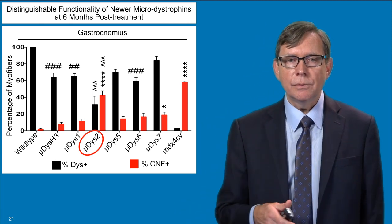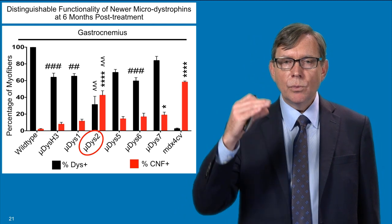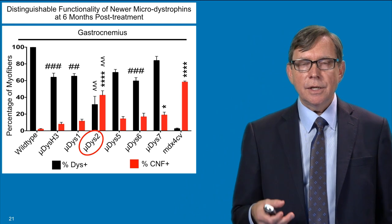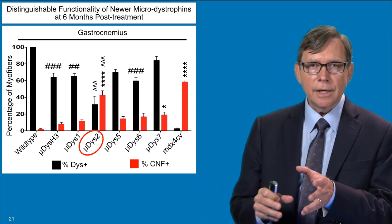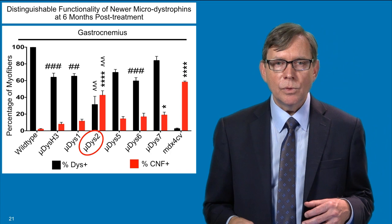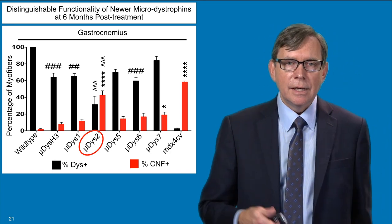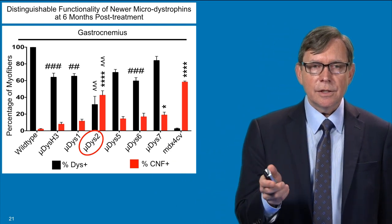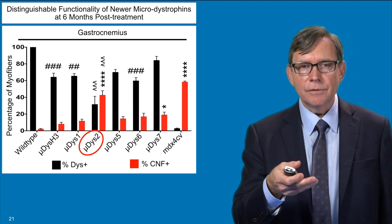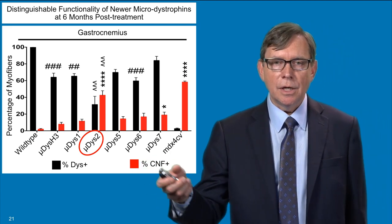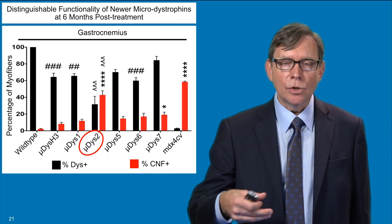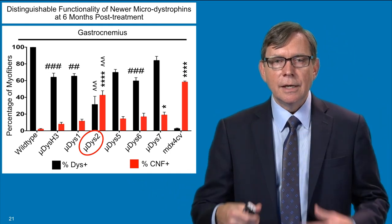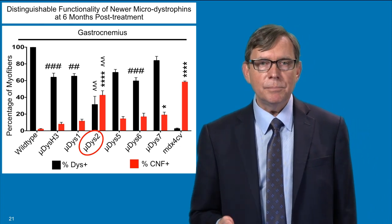That data is shown here with the red bars, where we want to see as small a red bar as possible — we don't want to see muscle cells that have the so-called centrally nucleated fibers or CNF; we want to see those nuclei on the periphery. Different micro dystrophins have different features. The important thing to take out of this slide is that the wild type level is at one extreme, and the untreated dystrophic MDX4CV animals are at the other extreme. We're looking at different micro dystrophins that will bridge the gap between those two.